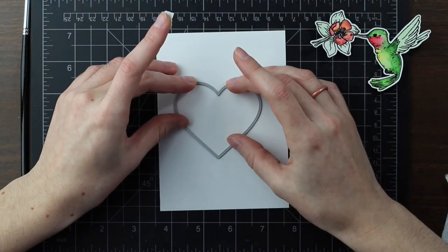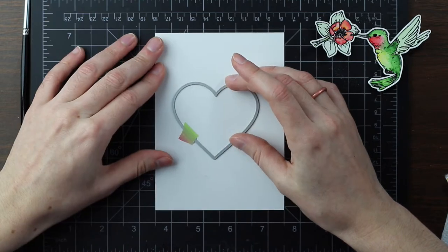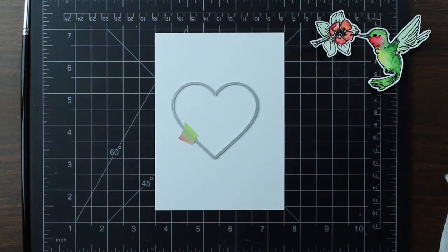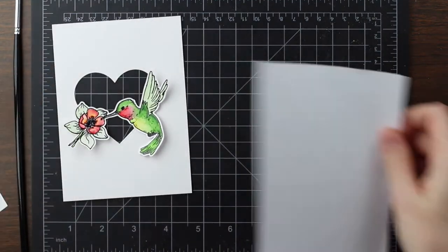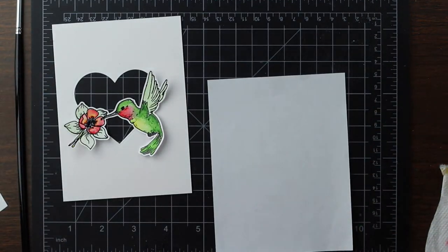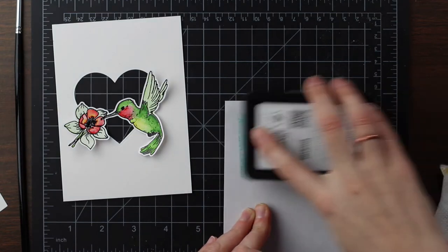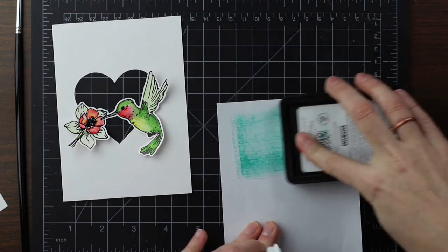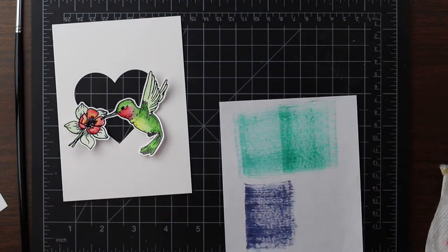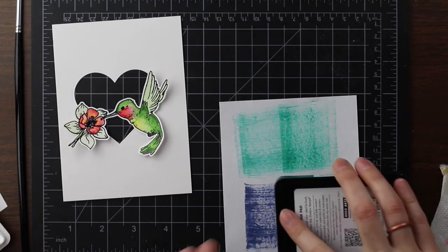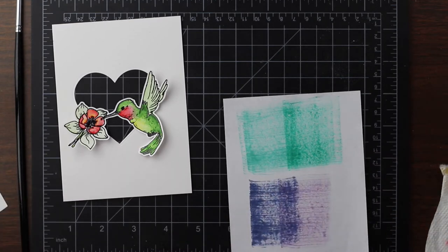I'm going to make the panel for this hummingbird to set the scene for the hummingbird. So I'm going to die cut it using one of the heart infinity dies. I'm die cutting it also out of Bristol cardstock just so it matches the hummingbird. And that's going to create the window. I'm not going to be doing a fancy blended background, but I just wanted a little pop of color. I'm really into making blended backgrounds lately. So just kind of wanted to do that.